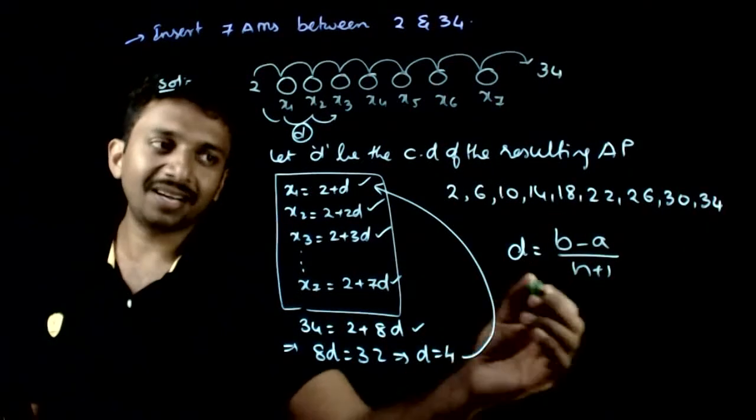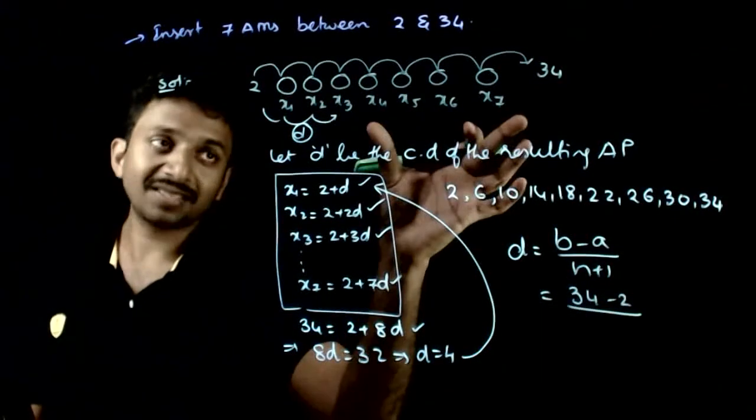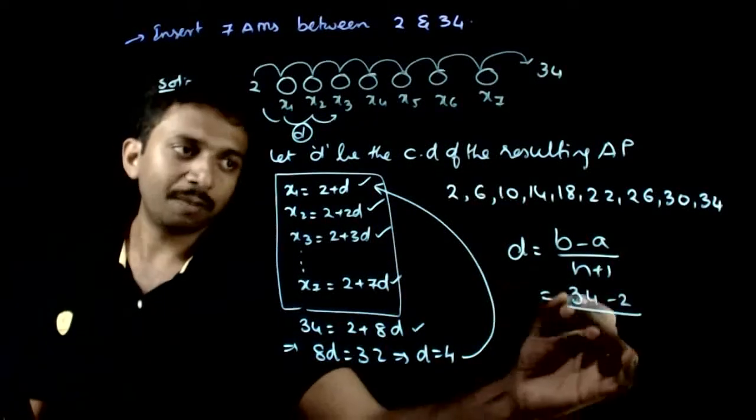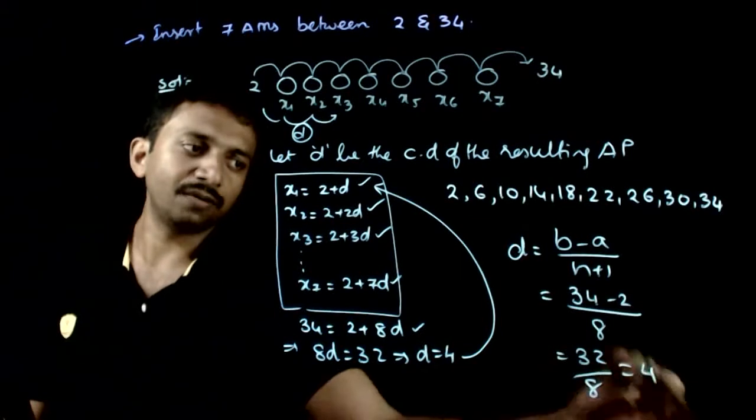Using this formula, D's value will come directly. 34 minus 2 by n is the number of AMs, 7 plus 1 is 8. That is equal to 32 by 8 is equal to 4.